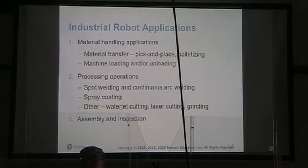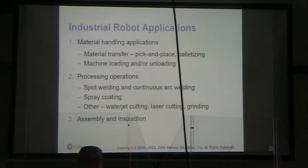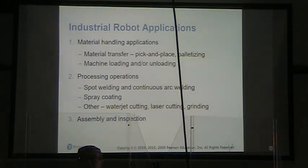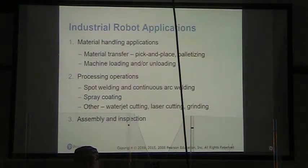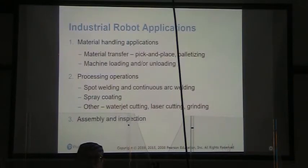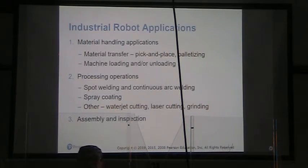What do we use industrial robots for? We have three main categories. Material handling includes material transfer — pick and place, palletizing — and machine loading and unloading. For example, a robot can load and unload parts from a CNC machine, eliminating the need for humans in that process unless there is a machine jam.